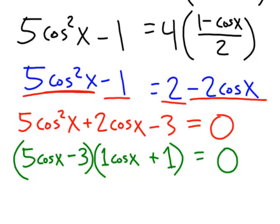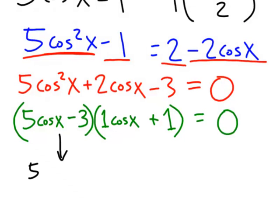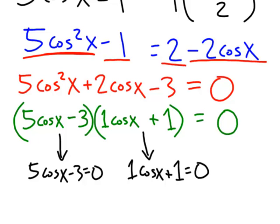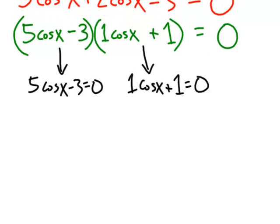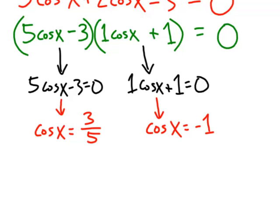And then that factored equation is what yields two simpler equations. Five cosine x minus three can equal zero. That factor can equal zero, or this other factor can equal zero. One cosine x plus one. Okay, so I've chosen what I'll call a medium level example here. It's not the easiest one I could have done, but it does present as something here that you may or may not be comfortable dealing with.